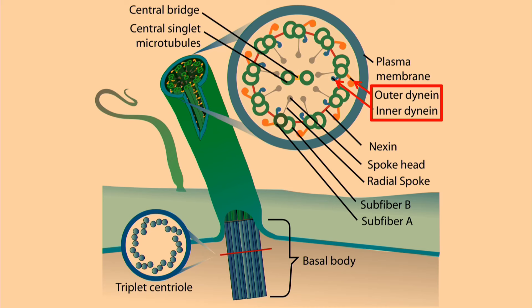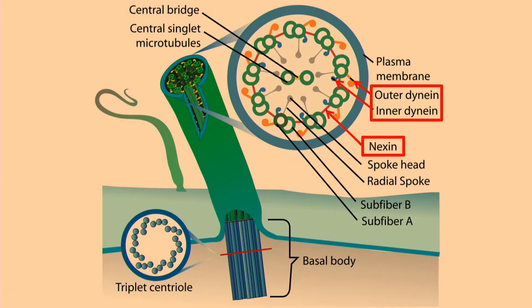The dynein proteins reach over, grab ahold of the neighboring microtubule and push down on it — much the same way that muscle fibers called myosin reach over and grab ahold of the neighboring actin fiber and push on it, performing contraction. That's how the muscle cell shortens up. But you don't want these microtubules to slide past one another — you want it to bend. So there's another protein called nexin that keeps the microtubules together so that the whole structure bends rather than sliding adjacent to one another.